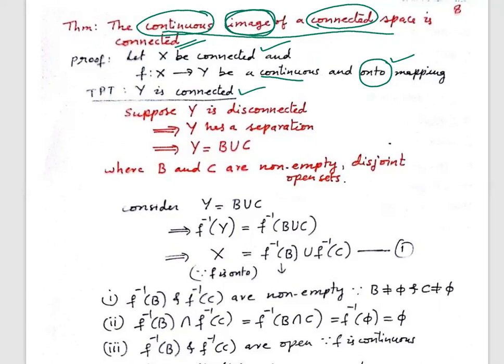Suppose y is disconnected. That means it has a separation — we can write y as the union of two non-empty, disjoint, open sets. This follows from the first theorem on connectedness. So, y equals b union c, where b and c are non-empty, disjoint, open sets.